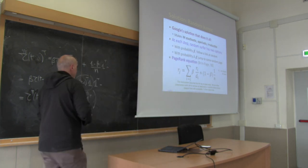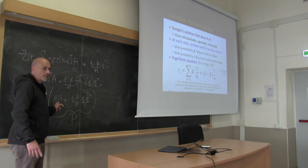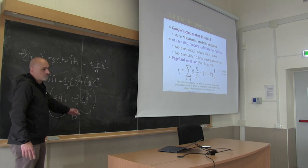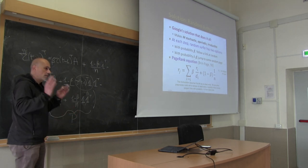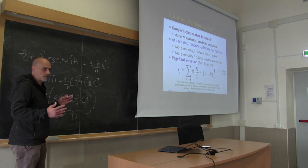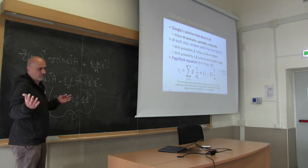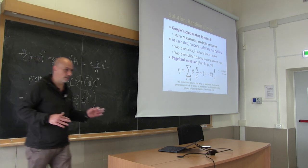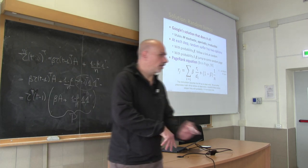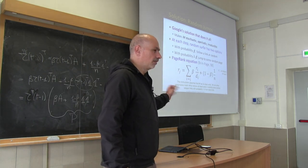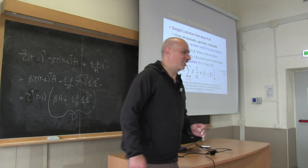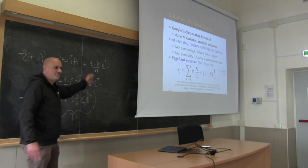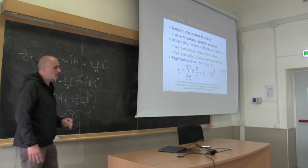Brin and Page, also running experiments, found that a good compromise between retaining the original topology and achieving convergence in roughly 50 to 80 iterations was to pick beta between 0.8 and 0.9. The mathematical reason has to do with the logarithm of n multiplied by something. If I have time I will show you.